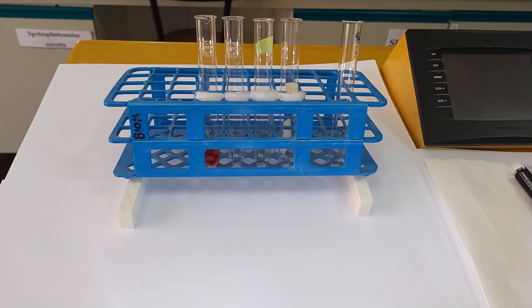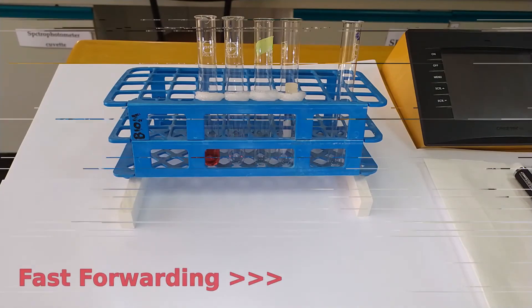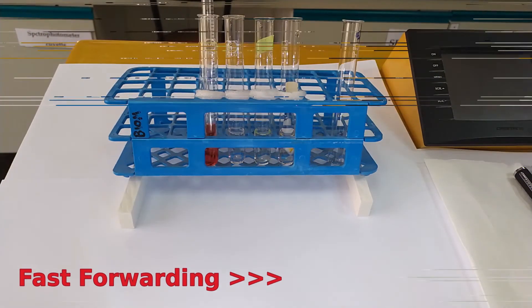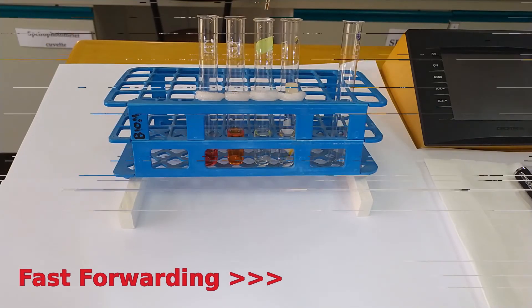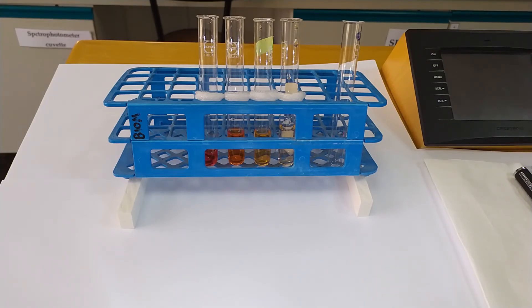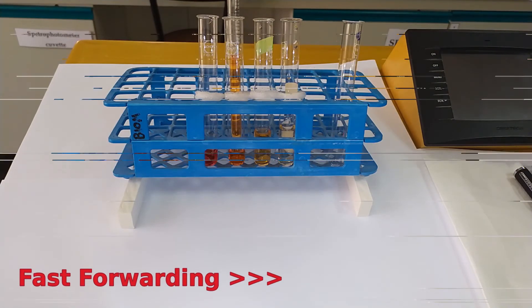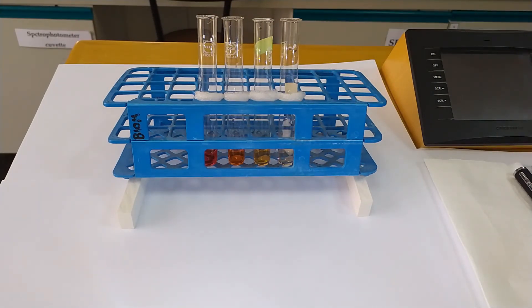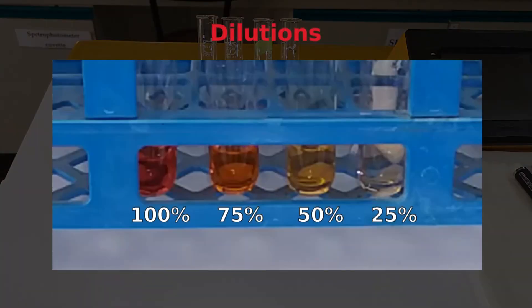Now, here we have a red solution. Let me prepare a few different dilutions to produce a range of concentrations of this color. I'm just going to equalize the volumes. Get rid of the waste tube. Okay. And so now what you can see is that we have a range of colors based on the original red color.